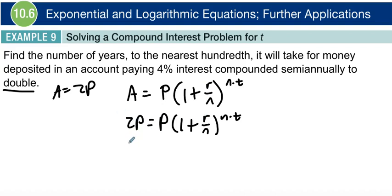We obviously don't know what the principle is. So we'll say we want to double the principle equals principle times one plus our rate. It says it's 4%, so four one-hundredths. And when is it being compounded? Semi-annually, so that's two times a year, so that's two. Our n will be two. And we don't know our time. That's what we're trying to find is our T.